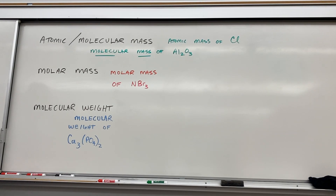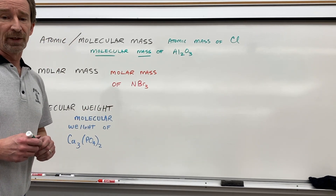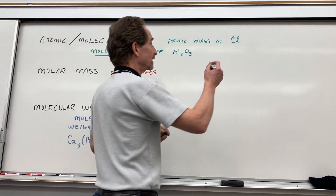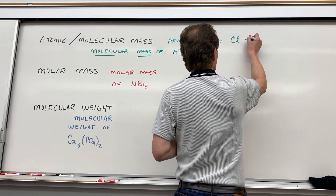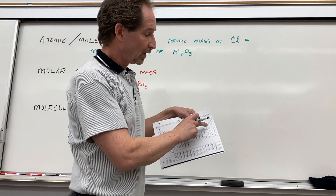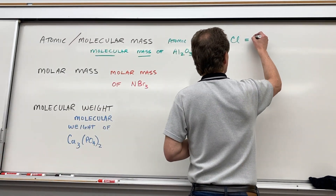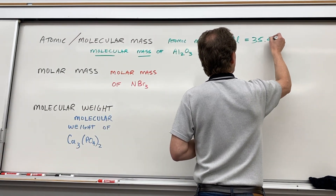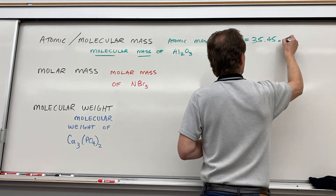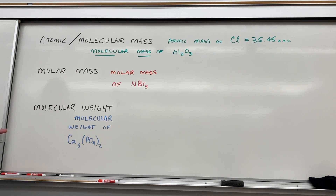Let's look at some real examples. If I want the atomic mass of chlorine, I simply read the number off the periodic table. I pull my periodic table out and read off the mass of chlorine, and it's 35.45 AMU, atomic mass units. And that's it — that's my atomic mass.